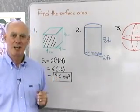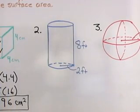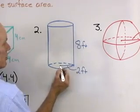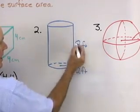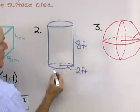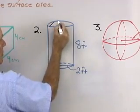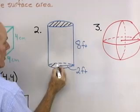Next, we want to look at the surface area of a cylinder. Our cylinder has a radius of 2 feet for the base, and it has a height of 8 feet, and we're going to assume that this cylinder is closed at the top and also at the bottom.